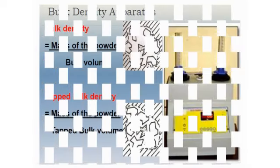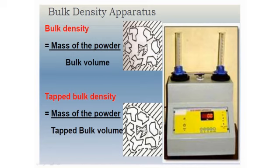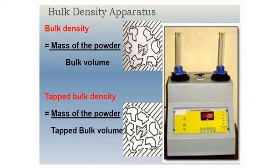In bulk density, between the particles there are numerous voids — empty spaces — resulting in a high volume. In tap density, because of the tapping, the solid particles arrange themselves to attain a minimum amount of void compared to the untapped state. This is the tapped bulk density. The data is used to decide the proper size of the capsule or packaging material for powder filling. Higher the bulk volume, lower the bulk density, and bigger is the size of the capsule required.